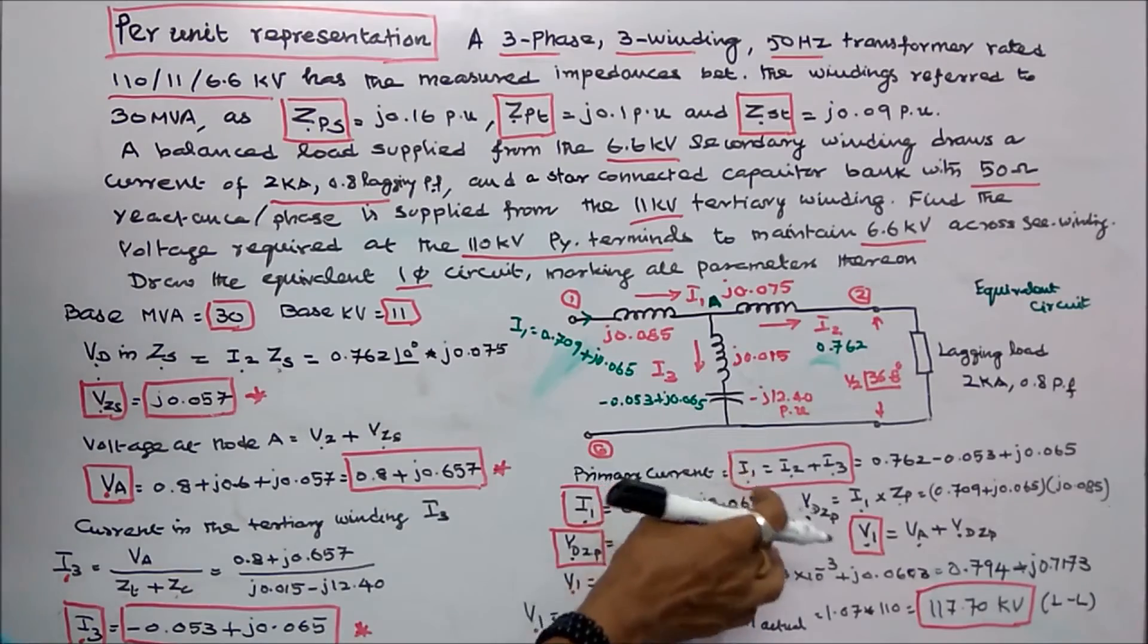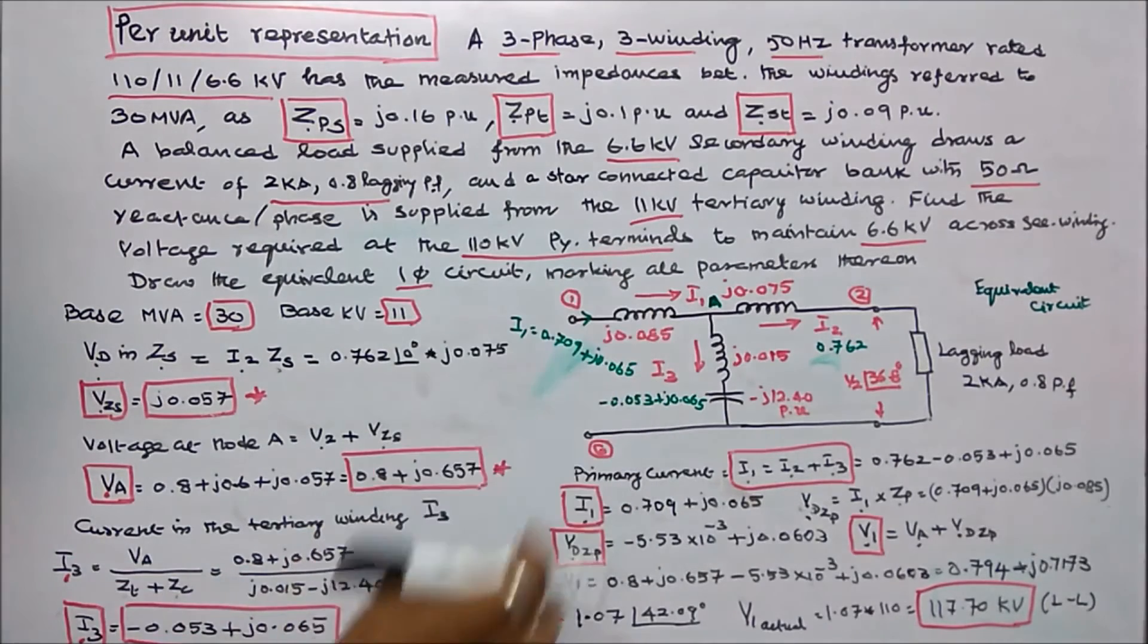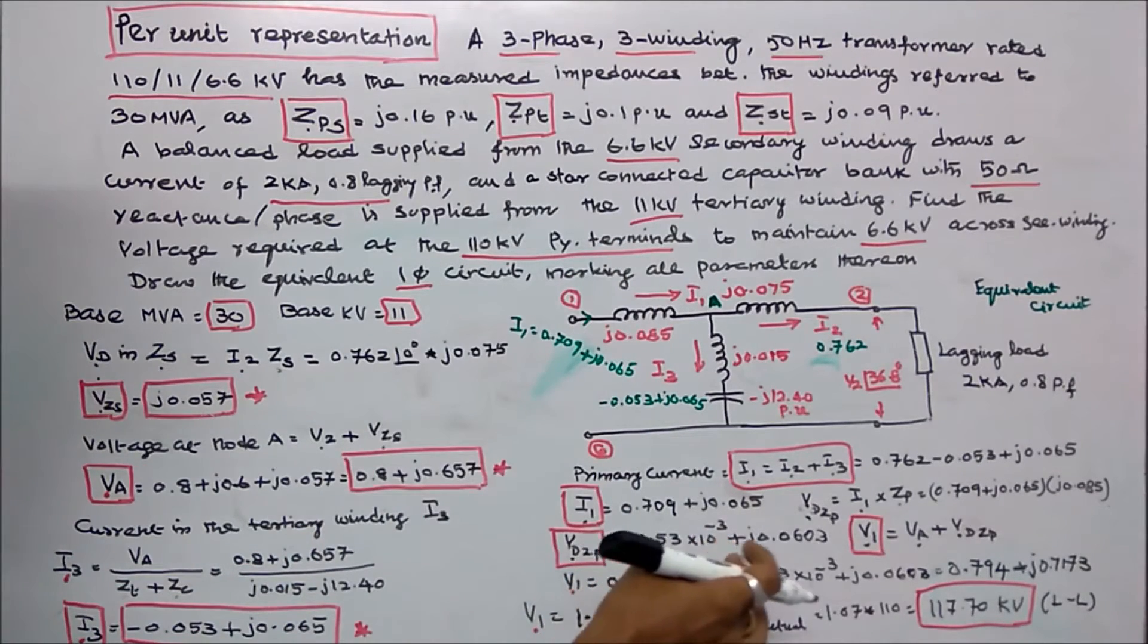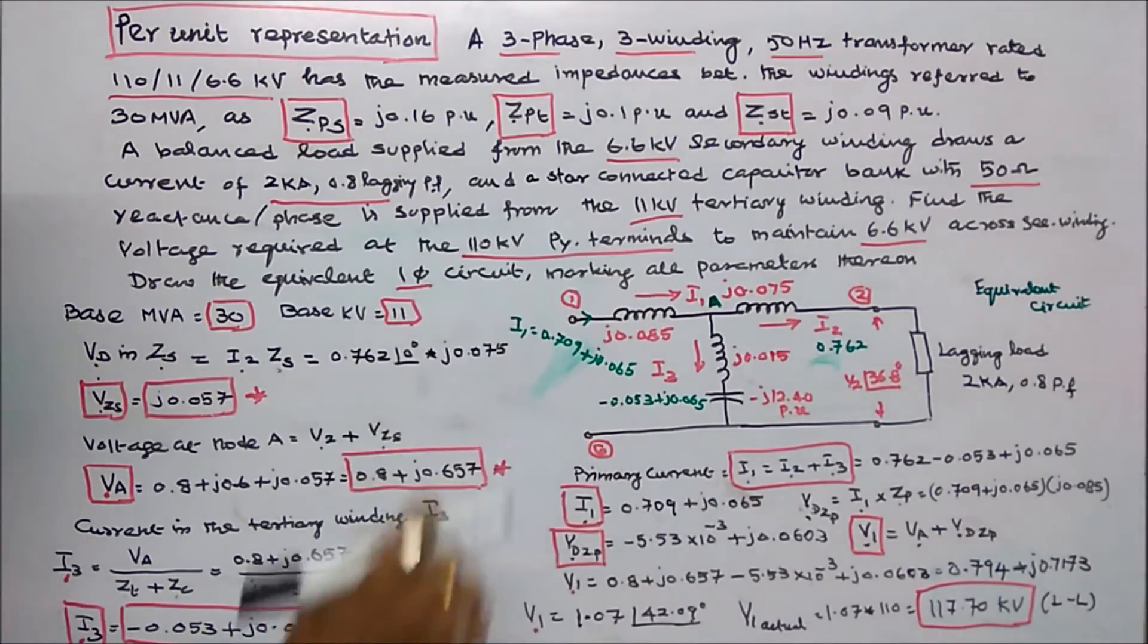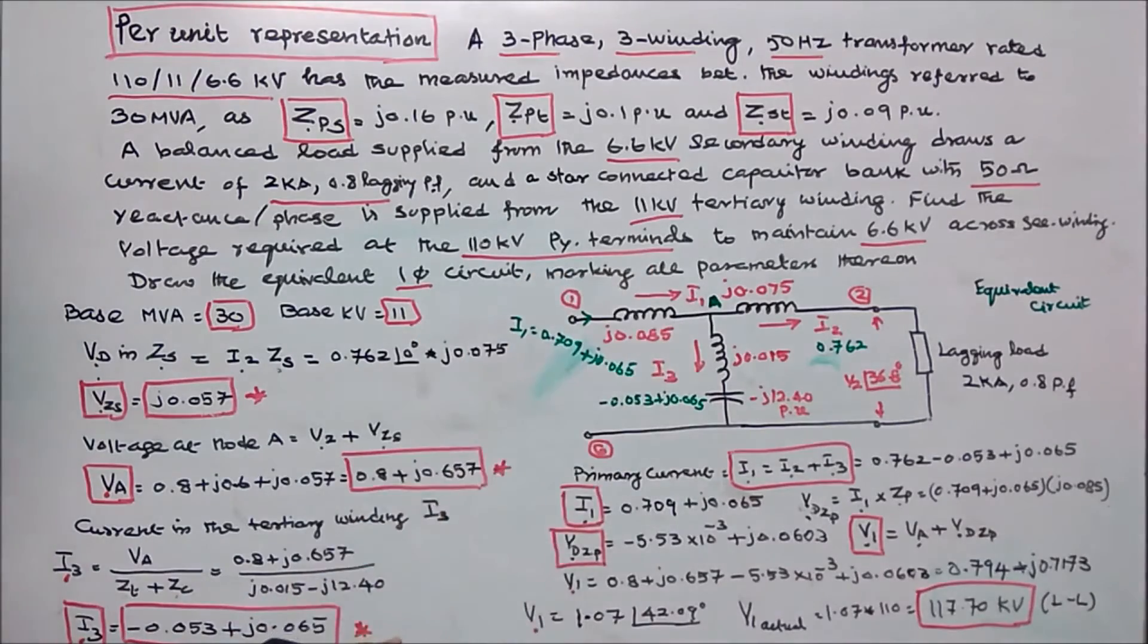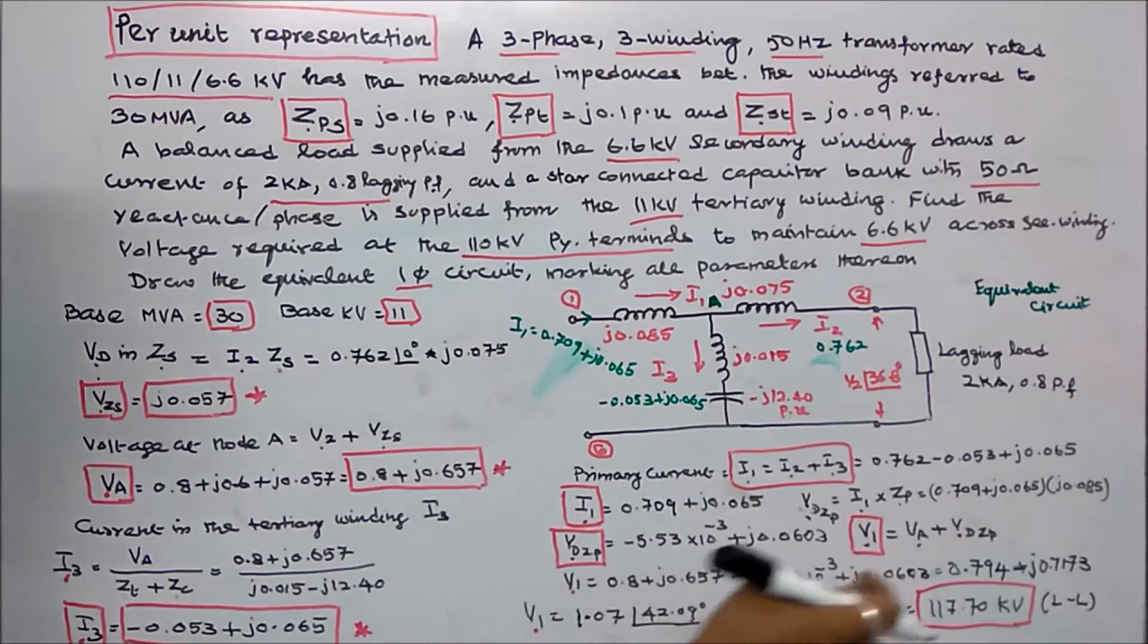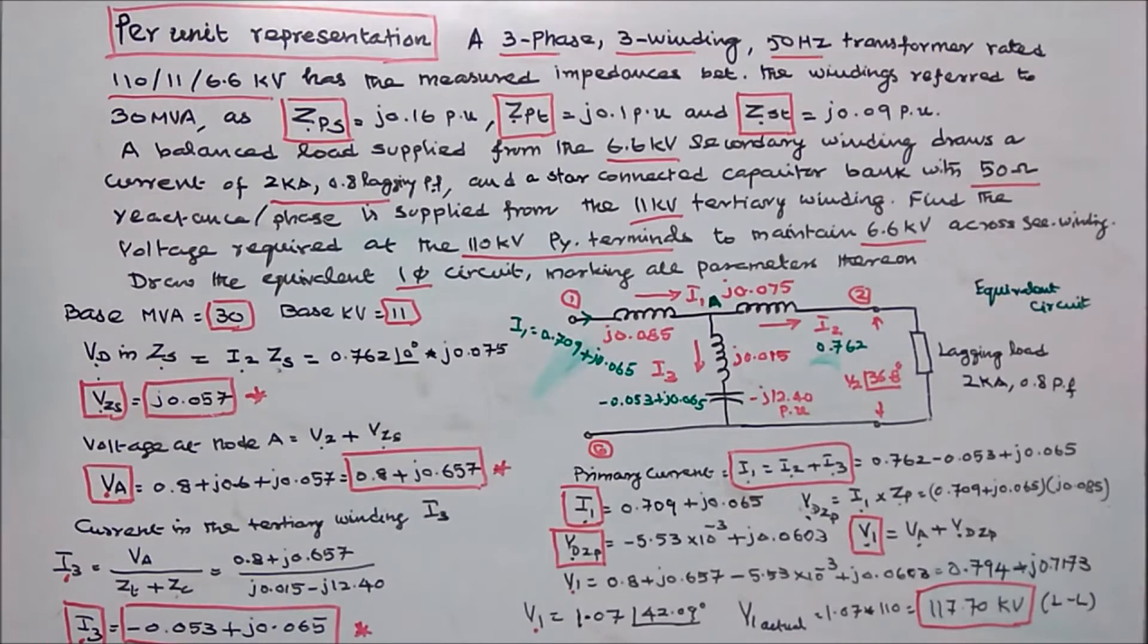So I1 into primary impedance, that will be the drop. Voltage drop in the primary winding is equal to minus 5.53 into 10 power minus 3 plus J 0.063. I can find the primary voltage V1 is equal to VA plus drop, voltage at node A plus this drop. So V1 is equal to 0.794 plus J 0.7173 in rectangular form. In polar form V1 per unit is equal to 1.07 angle 43.09 degrees.